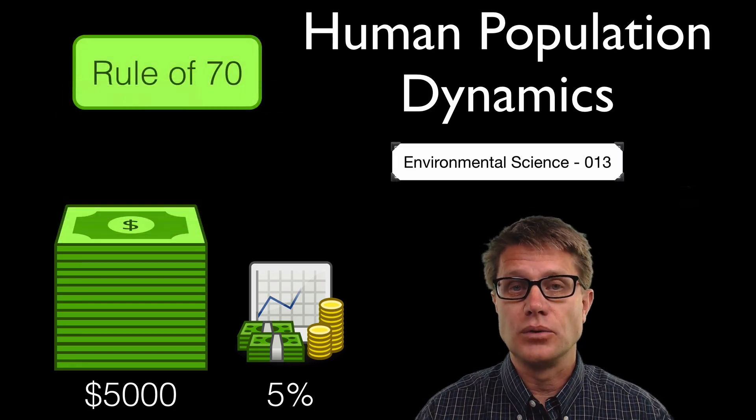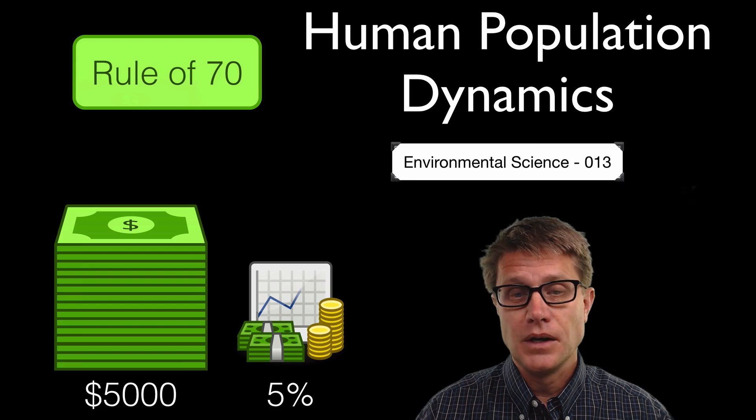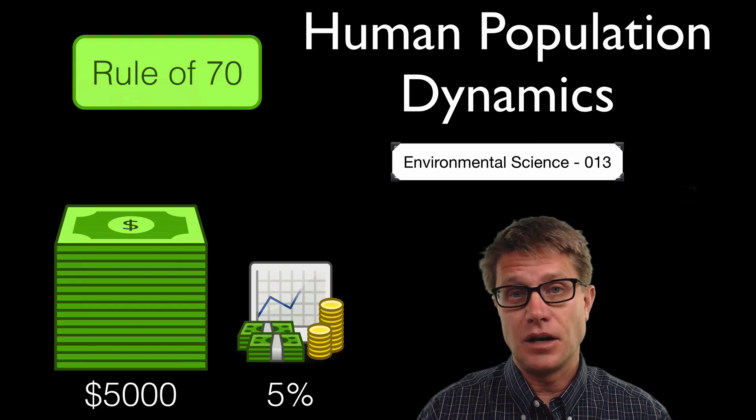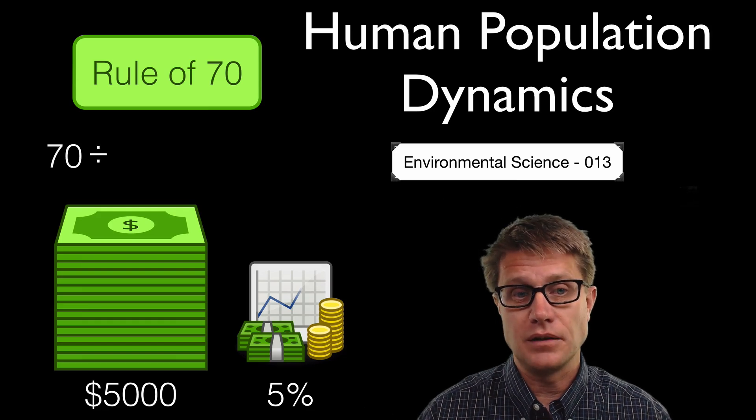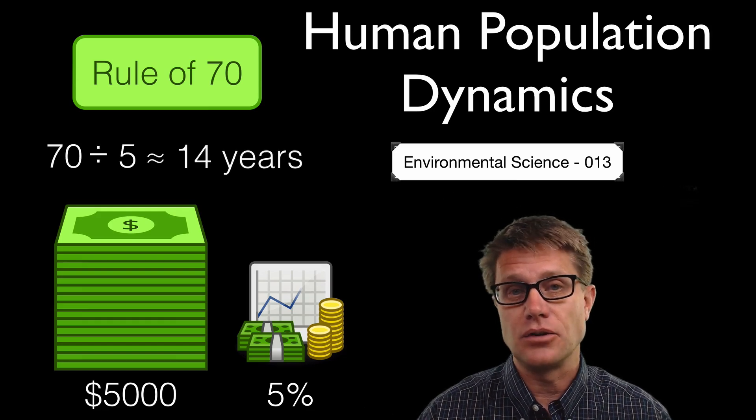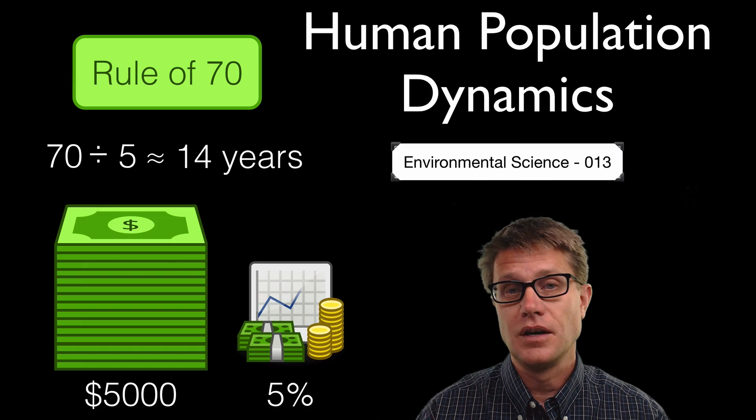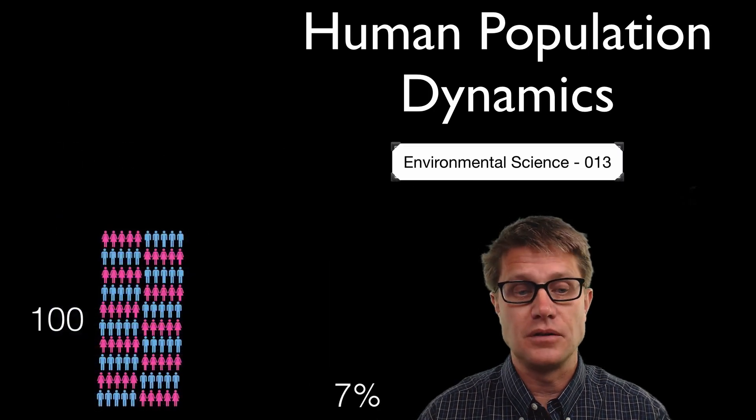Unless you understand the rule of 70, which is really simple, to figure out the time it takes to double your money all you do is take the number 70 and you divide it by that percent. So divide it by 5 and it is going to take you approximately 14 years to double your money. Super easy to do.